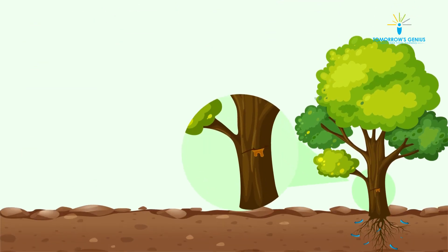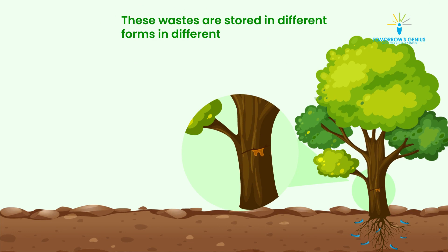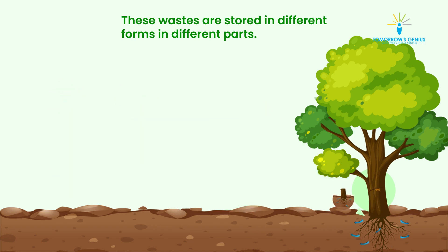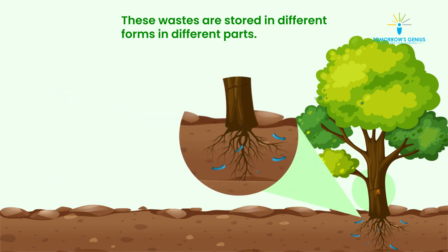Other than the gaseous wastes, metabolism in plants also generates organic by-products. These wastes are stored in different forms in different parts. Gums, oils, latex, resins, etc. are some waste products stored in plant parts like barks, stems, leaves, etc. Eventually, plants shed off these parts.